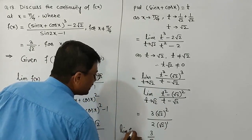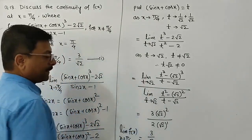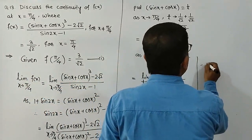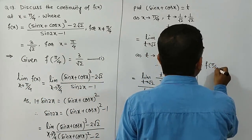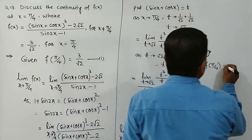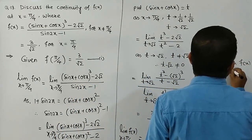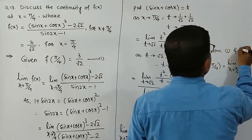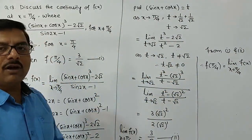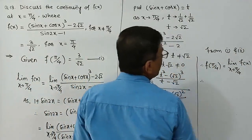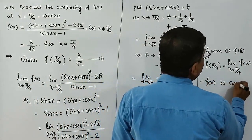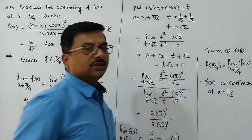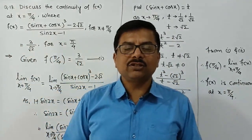So the limit of f(x) as x → π/4 is 3/√2, and the given value f(π/4) = 3/√2. Therefore f(π/4) equals the limit of f(x) as x → π/4. From these two results, f(x) is continuous at x = π/4.